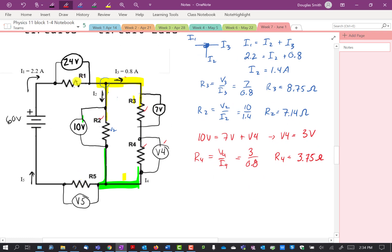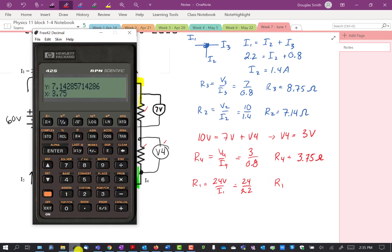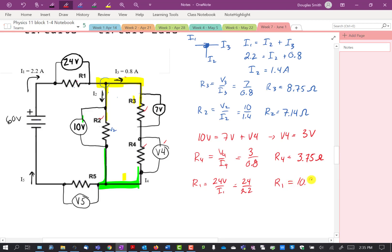We have to find those. We've got to find, let's do R1. R1 is equal to 24 volts divided by I1. So R1 is 24, 2.2, 10.9.